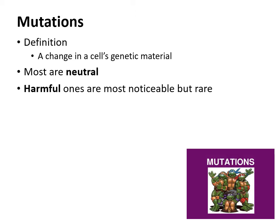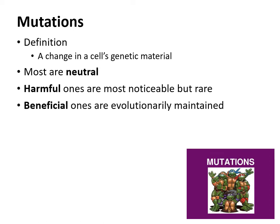Plus, if you think about genetics, you always have two alleles for each gene — one allele from mom, one allele from dad. So even if you have a harmful mutation in one, you usually have a second copy to make up for that. There are also some beneficial mutations, and these get evolutionarily maintained. If a mutation is beneficial, it increases the chances of that organism surviving, and if it survives, it has a better chance of reproducing, so that mutation gets passed on.